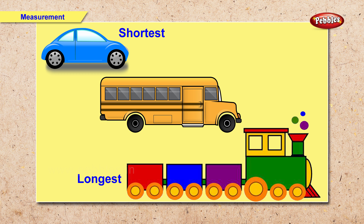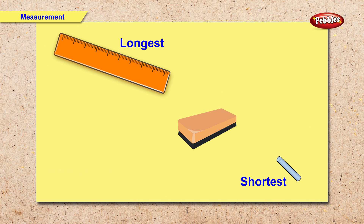Here we have a train, a bus and a car. Now you tell me which vehicle is longest and which vehicle is shortest? Right. Train is the longest and the car is the shortest. Here we have a duster, a chalk and a ruler. So which object is longest and which object is shortest? Right. A ruler is the longest and a chalk is the shortest.